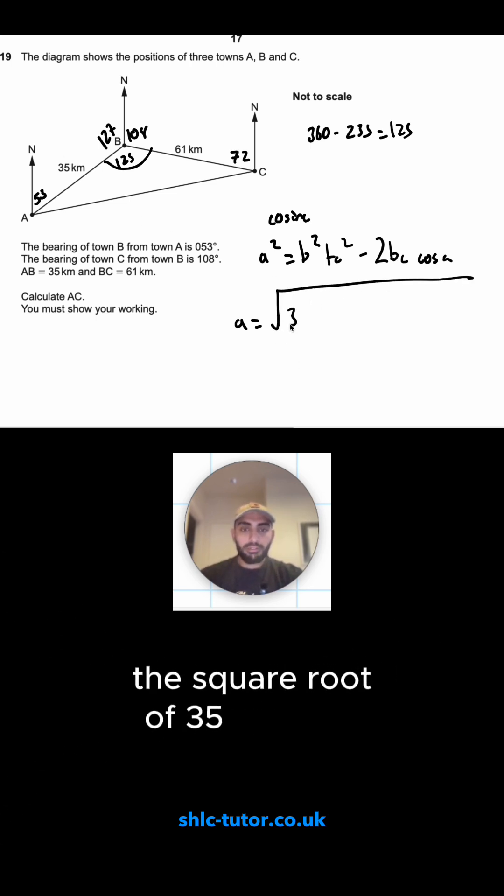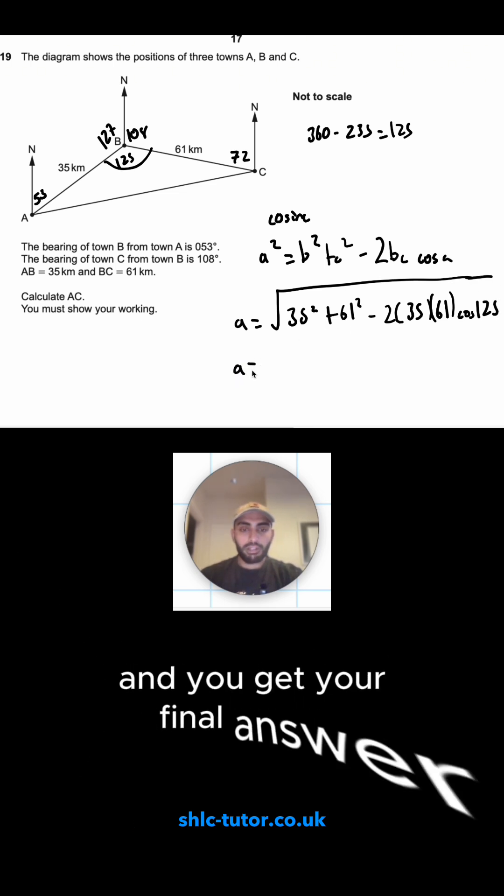The square root of 35 squared plus 61 squared minus 2 lots of 35 multiplied by 61 cos of 125. Just type this into the calculator and you'll get your final answer.